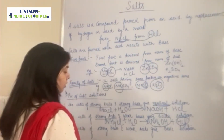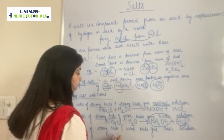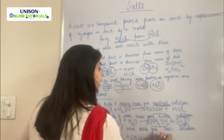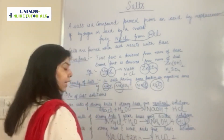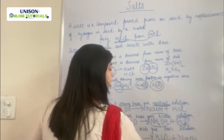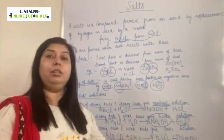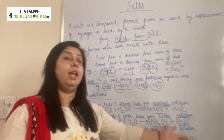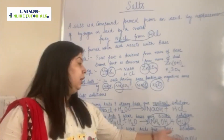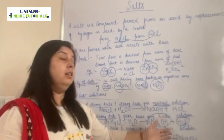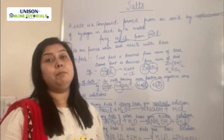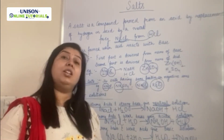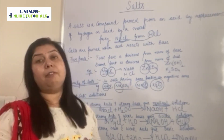Then we have a salt of strong base and weak acid — for example, sodium carbonate. On hydrolysis, you get H2CO3 (a weak acid) and NaOH (a strong base). H2CO3 will not be completely ionized, but NaOH will be completely ionized. OH- ions are liberated more than H+ ions, and hence the solution will be basic in nature.